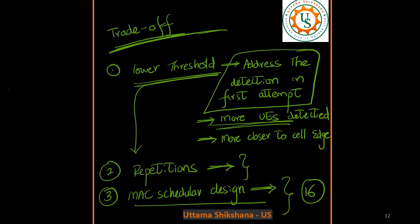With that, what is the other problem? There could be some UEs at the cell edge — we have to compromise on those UEs, and they will not be addressed in the first attempt. These cell-edge UEs have to go for a second or third attempt by increasing their power, so they will eventually be addressed in a later attempt. Such a trade-off exists in the system, and considering all this trade-off and what the customer is looking for, the design of all these parameters should be done accordingly.